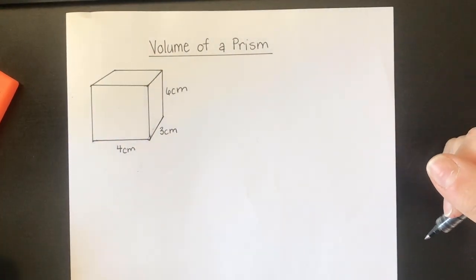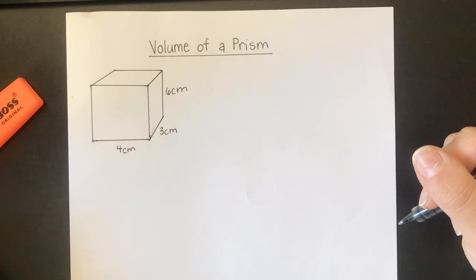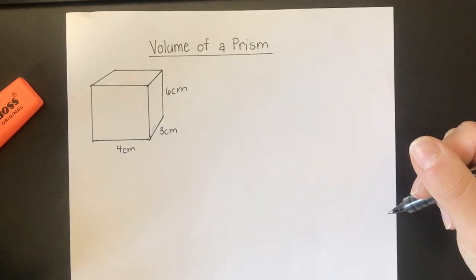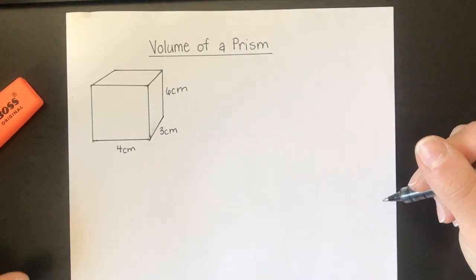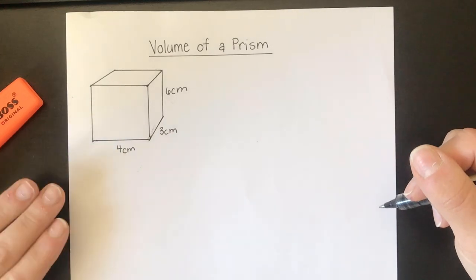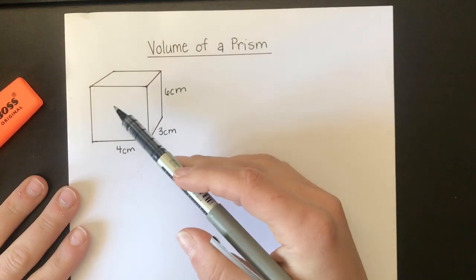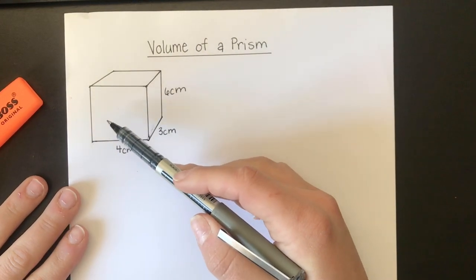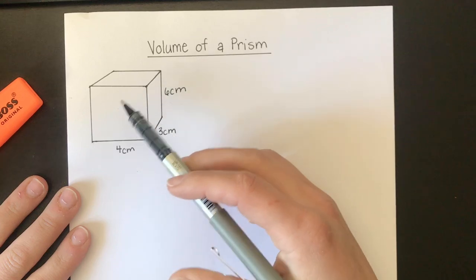Hi Year 11s! I'm trying something new — I'm making some videos to help you out with your maths. Today we're going to talk about volume of a prism. A prism is a 3D shape that has a face that goes the same all the way through.